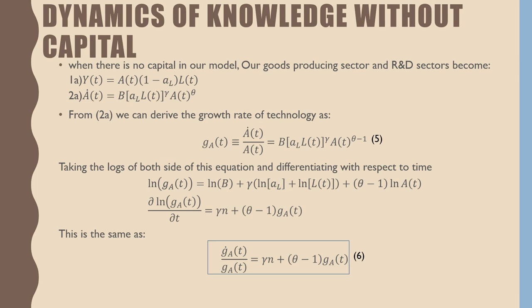Let's talk about the dynamics of knowledge without capital. When there is no capital in our model, our goods producing sector and our R&D sectors become the following: Y(t) equals A(t) times (1 minus a_L) times L(t).